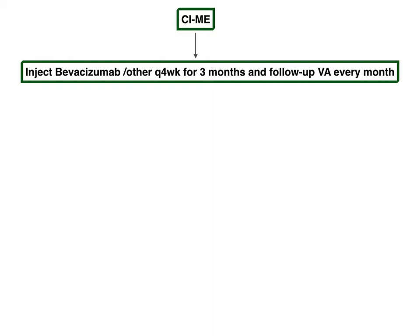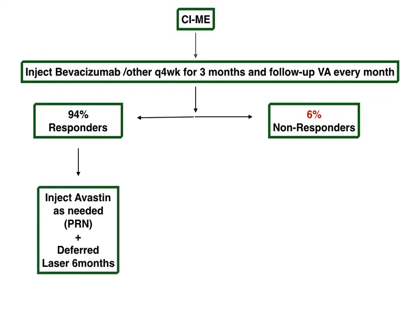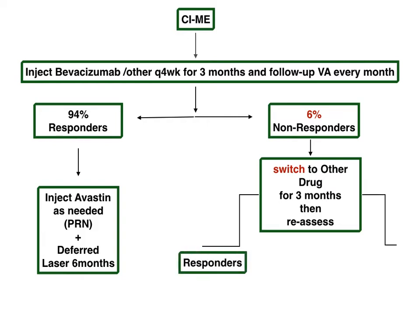We use ranibizumab or aflibercept per Protocol T if visual acuity is less than 20/40, then follow visual acuity monthly. More than 90 percent of cases are responders to the injection protocol and will have a moderate visual gain and better anatomy. We keep injecting until stable vision on two consecutive visits, deferring laser to six months if needed. For non-responders, switching to another drug may help, though this is expert-level evidence, and they follow a PRN protocol thereafter.